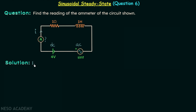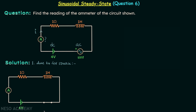In case number 1, we will find out the current due to the DC source, which provides 4 volts. In order to find the current due to this source, we will short circuit the AC source. We know that for DC, the inductor acts as a short circuit. Assuming the current due to this source is I_DC, we apply KVL in this loop: I_DC equals 4 volts divided by 1 ohm, giving us I_DC equal to 4 amperes.